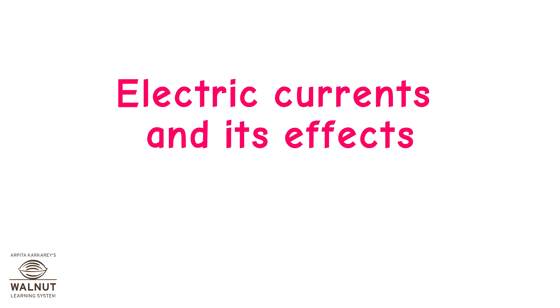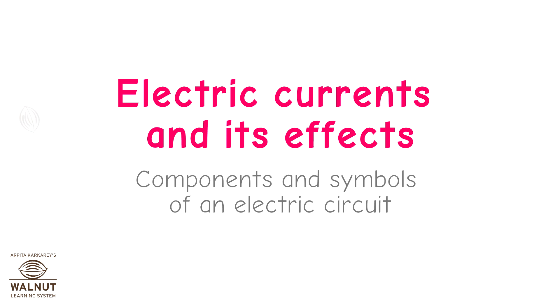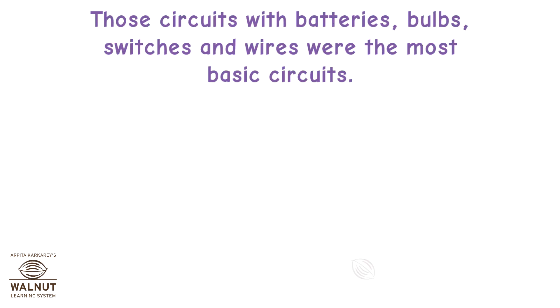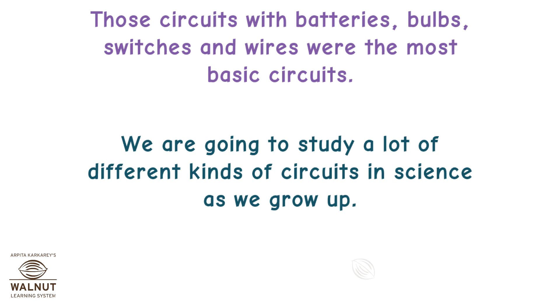Electric currents and its effects. Components and symbols of an electric circuit. You have already learned how circuits need to be complete for the bulb to light up. Those circuits with batteries, bulbs, switches and wires were the most basic circuits. We are going to study a lot of different kinds of circuits in science as we grow up.